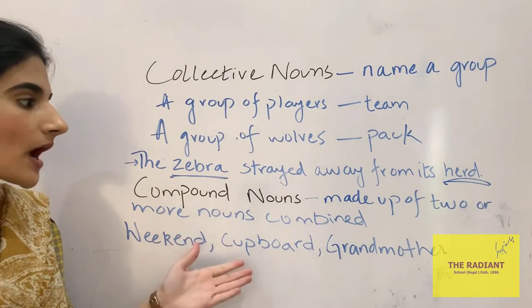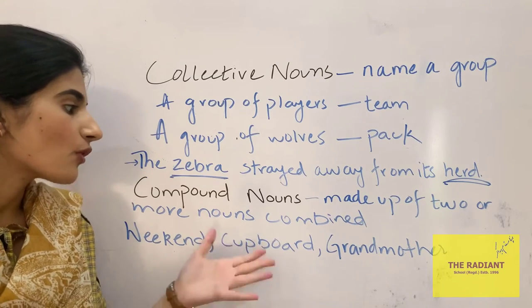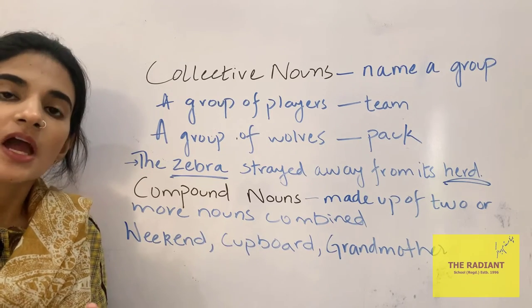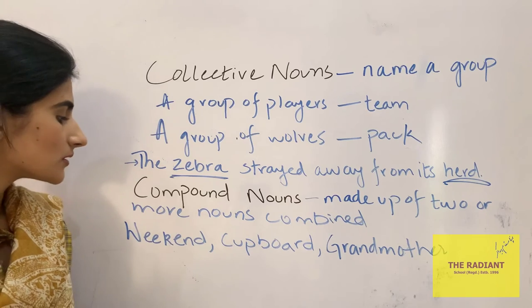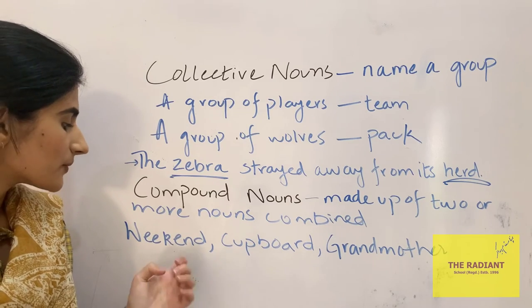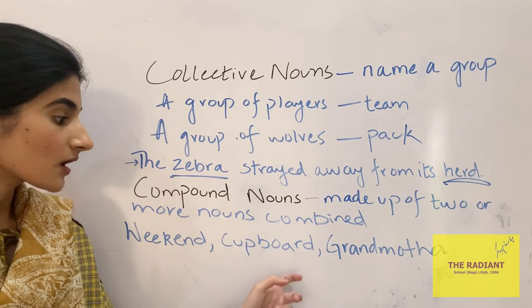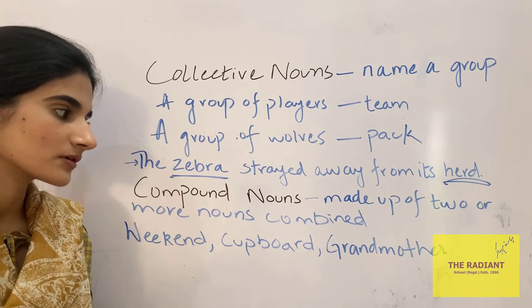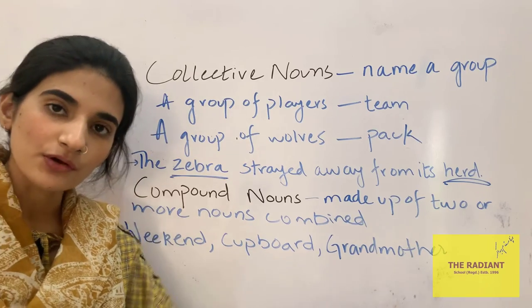Compound nouns are made up of two or more nouns combined to form one single noun. For example: weekend, cupboard, grandmother.